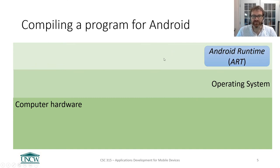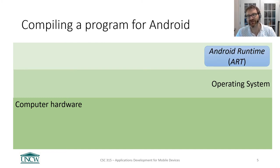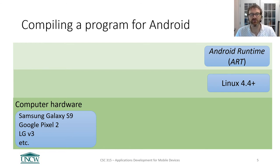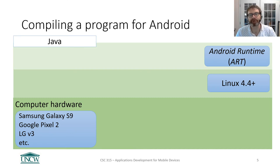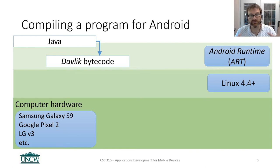Same thing in Android, but these things have different names, and you should know what they are. The virtual machine that all Android applications run in is called the Android Runtime, or ART. That's the virtual machine that Android programs run in. The operating system for Android is Linux 4.4 or higher — that's what's on every Android phone. The hardware is whatever particular model of phone you're running on. The Android emulator can simulate a variety of these different things for you. The language you write in is Java. Java gets compiled into what we call Dalvik bytecode — something specific to Android. These are things that the Android Runtime understands. It gives commands, handles lifecycles, knows how to draw widgets — all that stuff is encapsulated there.